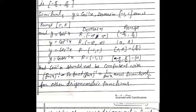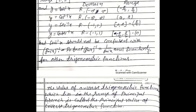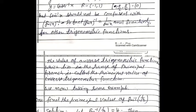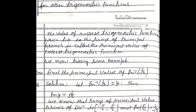Note the difference: sin⁻¹x is the inverse sine function, whereas (sin x)⁻¹ equals 1/sin x — they are not the same. Similarly for other trigonometric functions. The value of an inverse trigonometric function which lies in the range of its principal branch is called the principal value of that inverse trigonometric function.